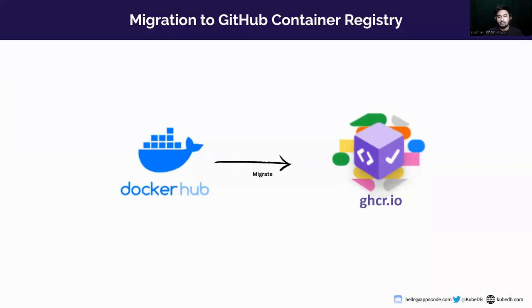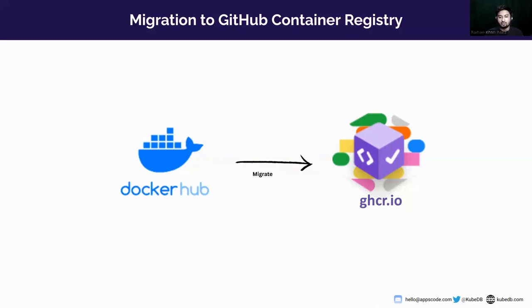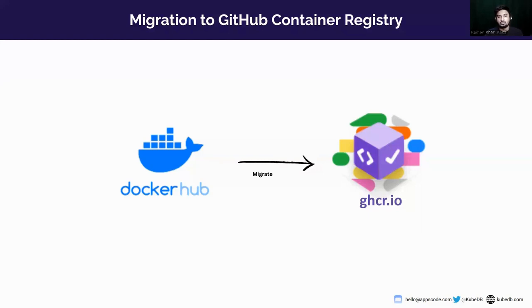We have migrated all of our operator images and custom database images from Docker Hub to GitHub Container Registry. We have been thinking about doing this for a while, and we have finally done it in this release. With the growing features of KUBEDB, Stash, and all of our addons, we wanted to keep our images in a more maintainable and sustainable way. So we have decided to migrate all of our images to GitHub Container Registry, or ghcr.io, and in our future releases, we will be publishing all of our operator images and custom Docker images there.